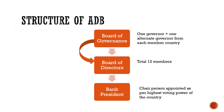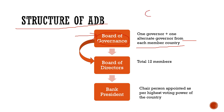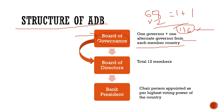The next is the organizational structure of ADB. In the organizational structure, first comes the Board of Governors, where one governor and one alternate governor is elected from each member country. There are 68 members, so one governor plus one alternate governor — that means 68 into 2 — total 136 members in the Board of Governors of ADB.